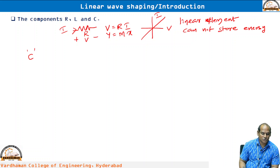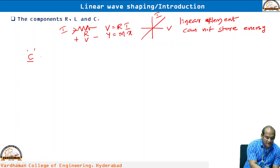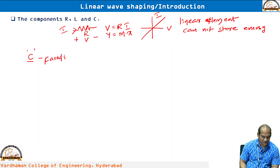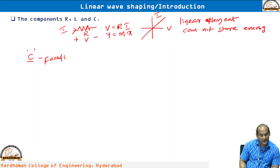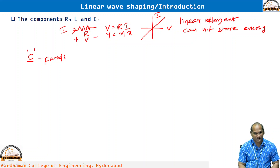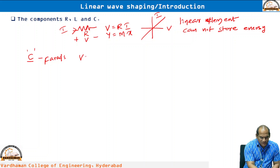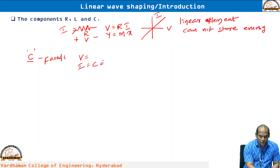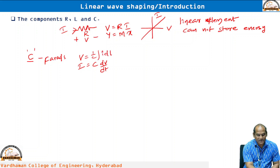We are going to deal with the capacitor a lot compared to the inductor, so we will concentrate on capacitor first. Capacitor is an energy storage element, measured in Farads, while resistance is measured in ohms. Capacitor stores energy in the form of the electric field, while inductor stores energy in the form of the magnetic field. The current through the capacitor is given by i equals C into dv/dt, and voltage is given by v equals 1/C times the integral of i dt.